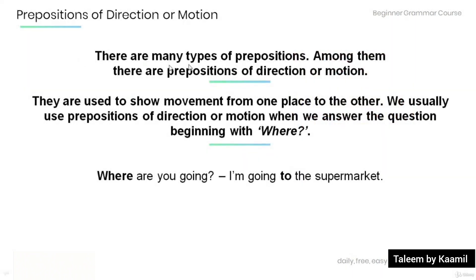Now there are many types of prepositions. Among them are prepositions of direction or motion. Note that these prepositions are used to show movement from one place to another. We usually use prepositions of direction or motion when we answer a question beginning with 'where.' For example: 'Where are you going?' — 'I'm going to the supermarket.' The preposition 'to' tells us where we're going — the supermarket.